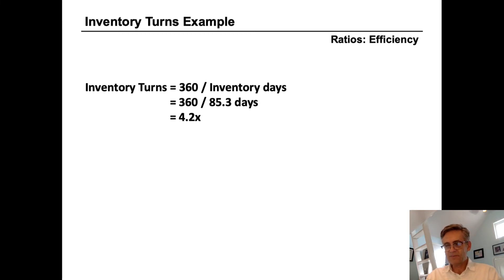Now, low margin companies like grocery stores need high volumes and very fast turns in order to be profitable. And high margin companies like jewelry stores can be profitable on lower turns.